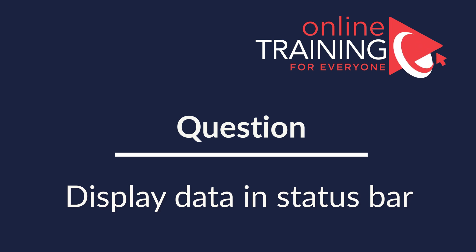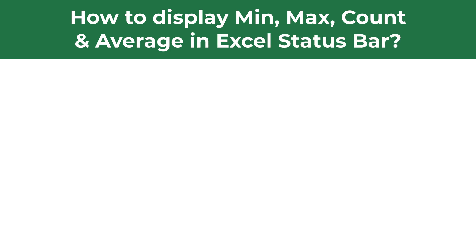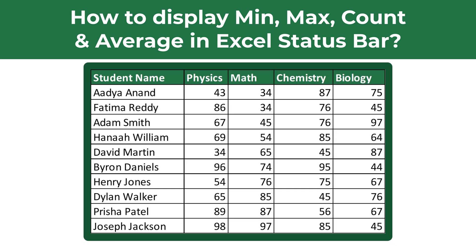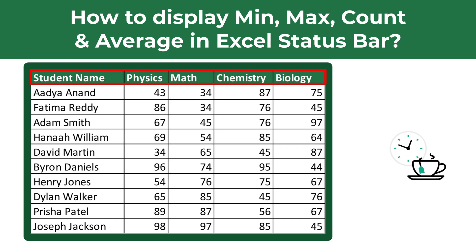Very frequently on the test you get a question about usage of formulas in Excel, and sometimes you get questions on how to display data in the status bar. For example: how to display minimum, maximum, count, and average in the Excel status bar. You're presented with a data set of student grades showing student names and their grades in physics, math, chemistry, and biology. Do you know how to add auto calculations in the status bar?